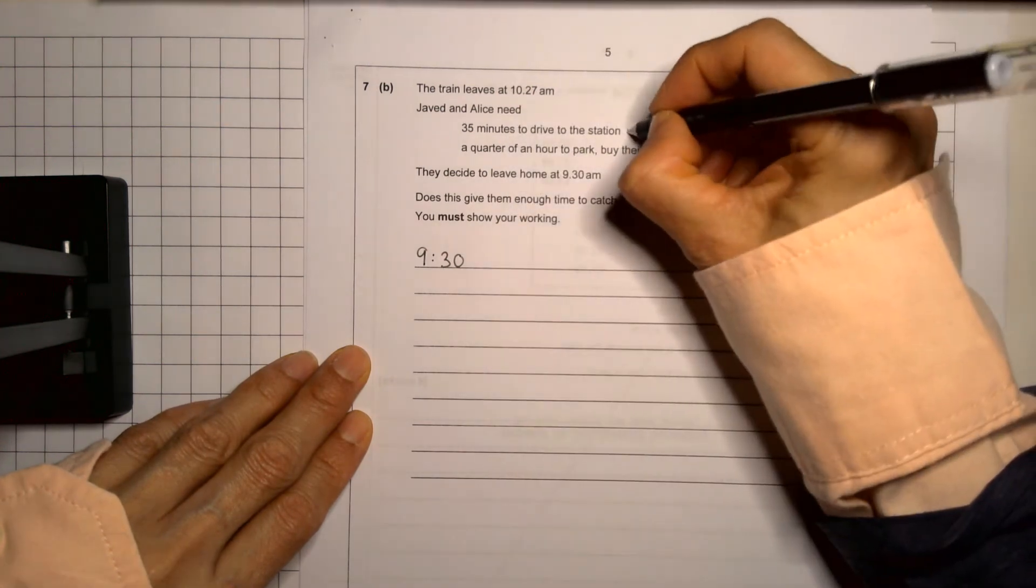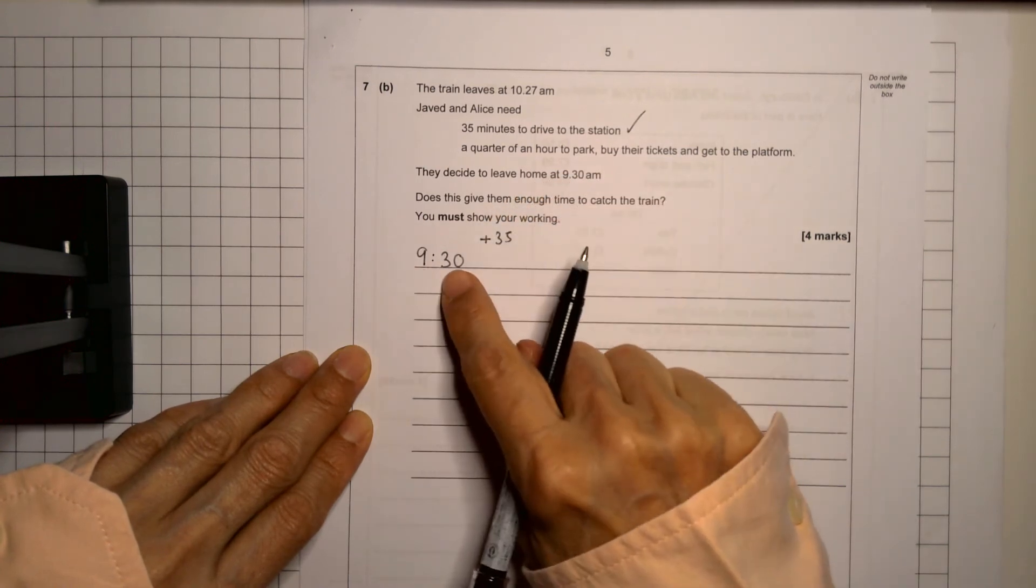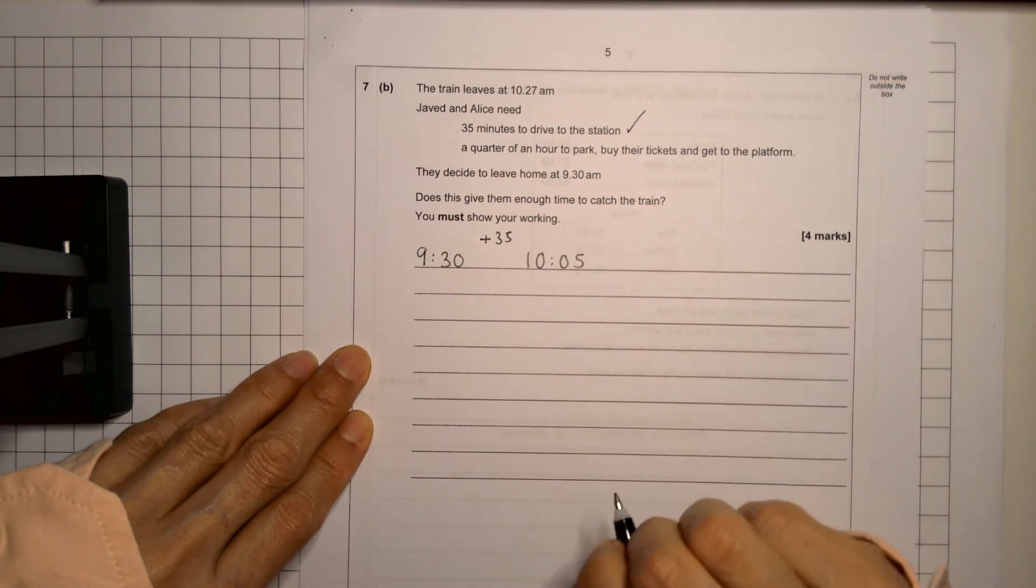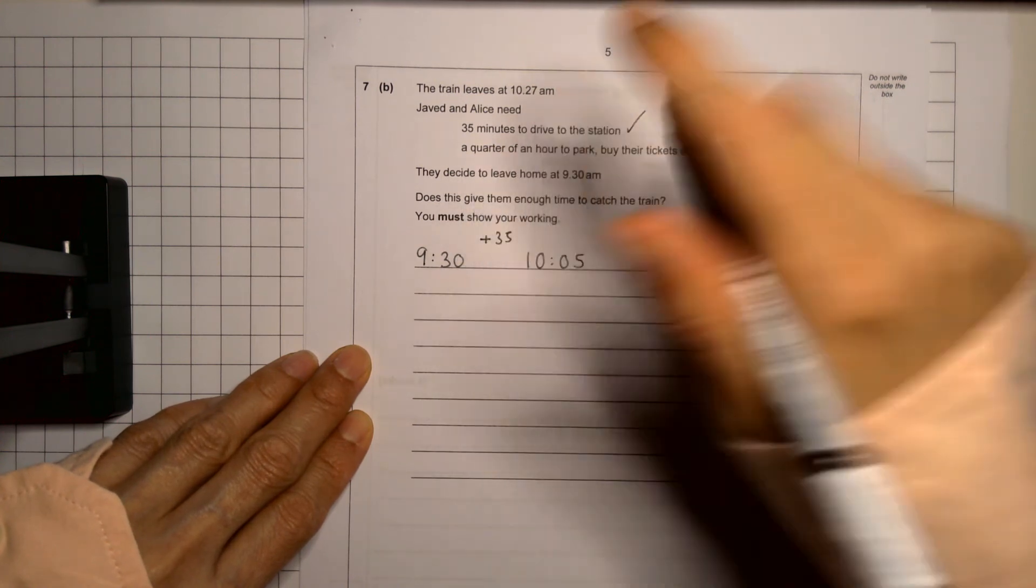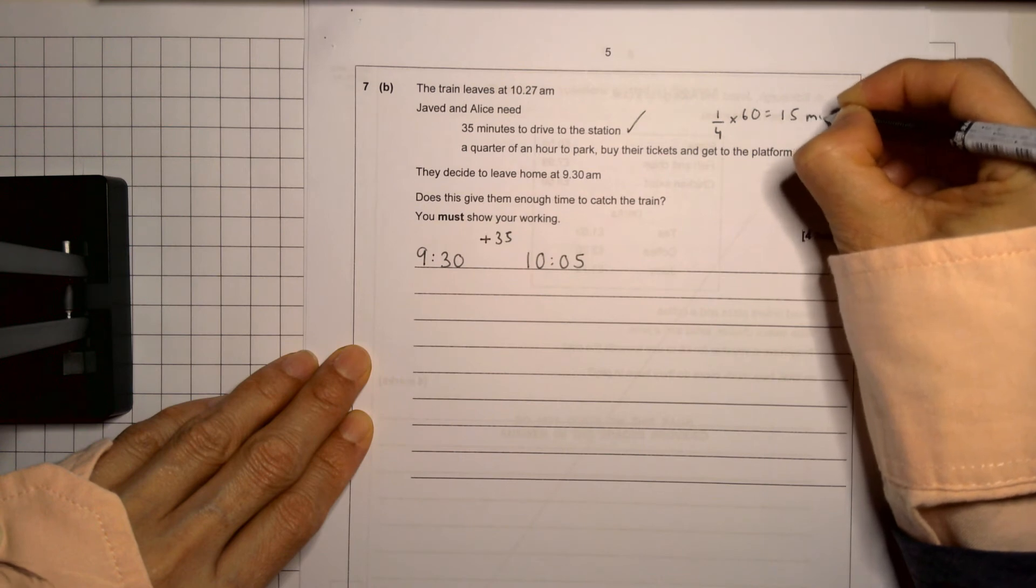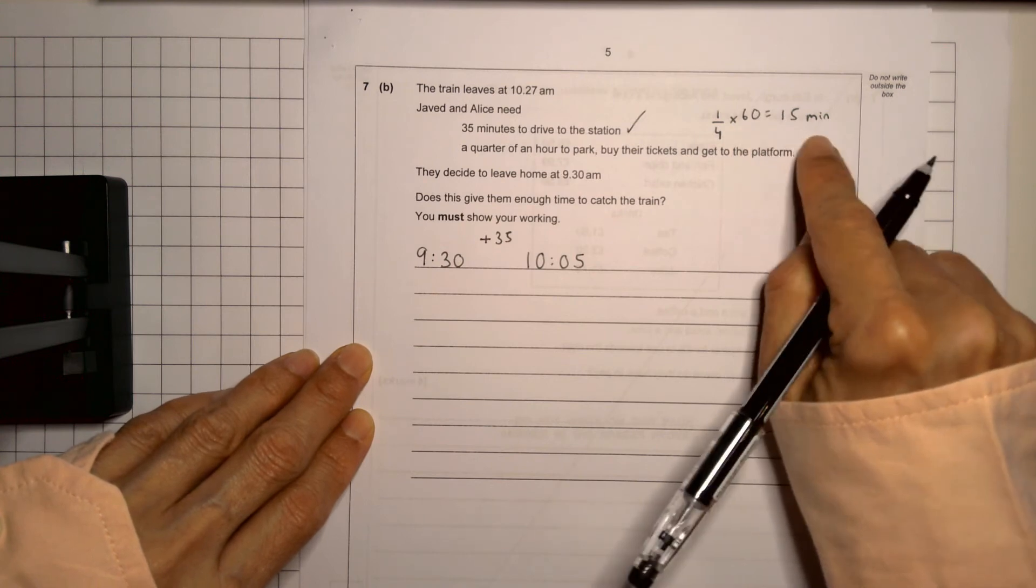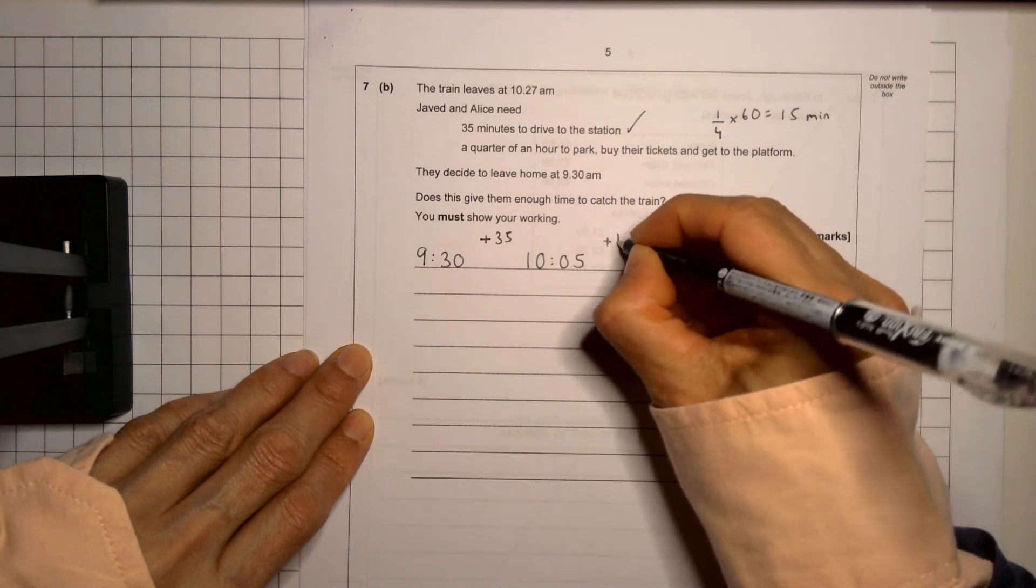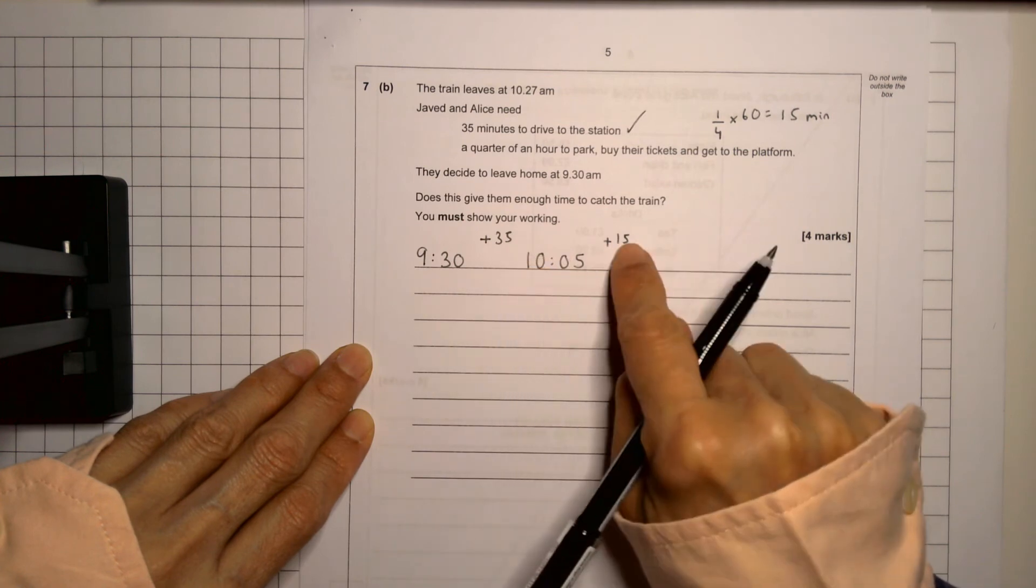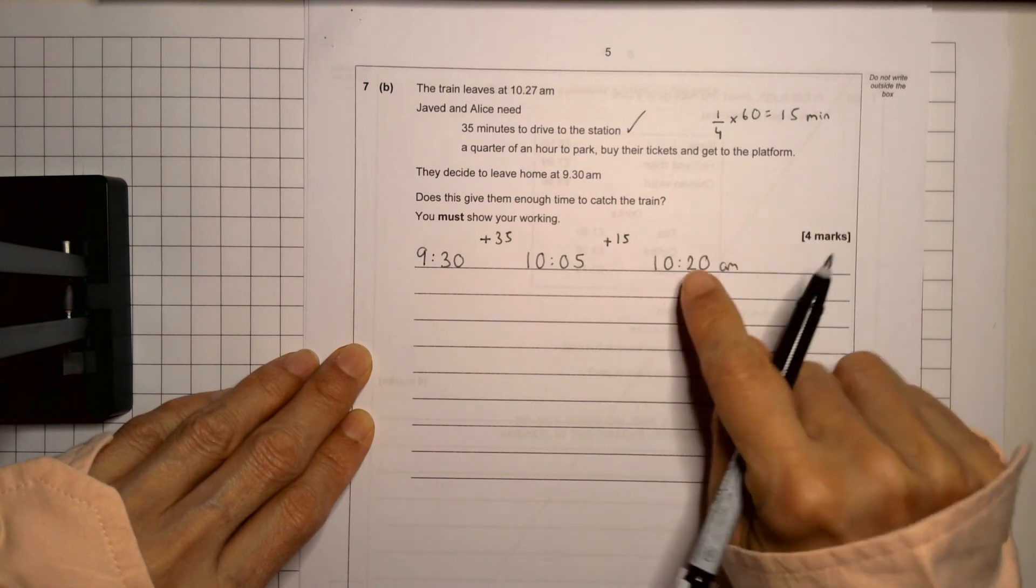So what do we need to do? So they need to drive to the station 35 minutes. So I'm going to add 35 minutes onto that. So 9:30 plus another 30 would be 10. Another five minutes makes it 10:05. Then we're going to do a quarter of an hour. Now a quarter of an hour, a quarter of 60 minutes is 15. An hour is 60 minutes. If you divide that into fours, halve it and halve it again, you get 30 and a half of 30 is 15. So a quarter of an hour is 15 minutes. So I'm going to add here 15 minutes to add on to that. So we have 5 plus 5 is 10 plus another 10. So that will make it 10:20.